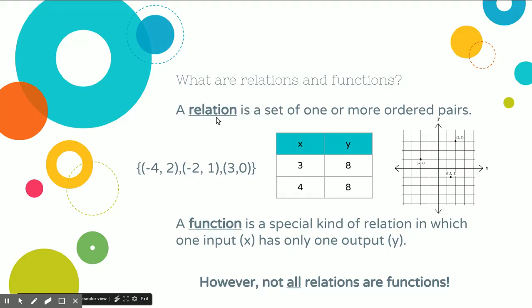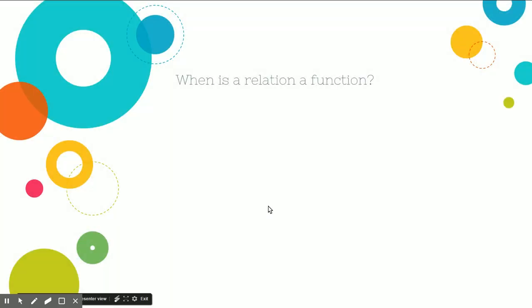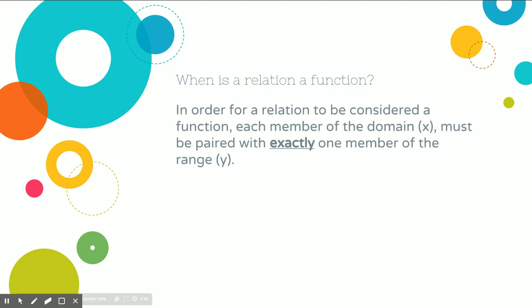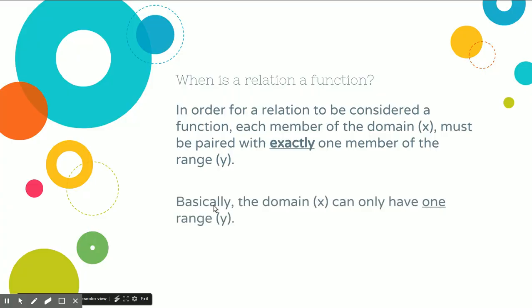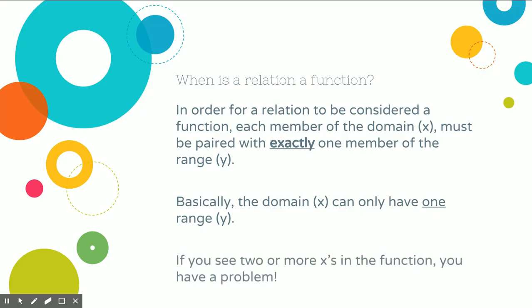Not all relations are functions. In order for a relation to be considered a function, each member of the domain — the x value — must be paired with exactly one member of the range. In simple terms, the domain can only have one range. If you see two or more x's that are the exact same number, then it is not a function — it's just a relation.